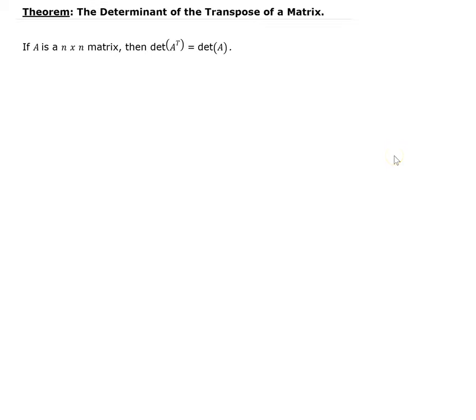Okay, this theorem states that if A is a square matrix, in this case an n by n matrix, then the determinant of A transpose is equal to the original determinant of A.